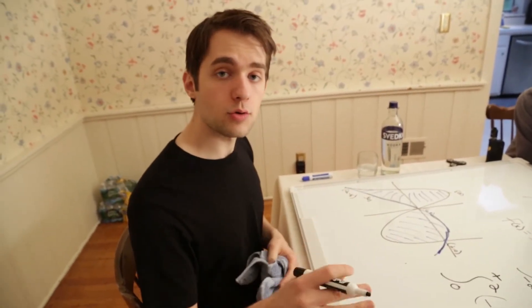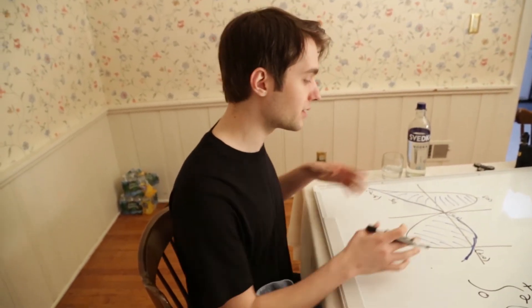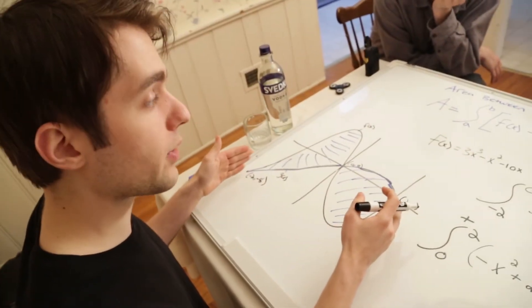But you're just gonna evaluate this like a normal integral from here on out. Just know that if you have two graphs that intersect in more than two places, this is how you approach that problem when trying to find the area between two curves. That's it.